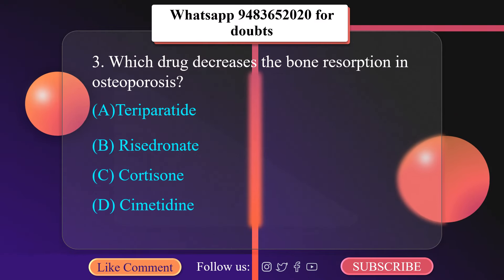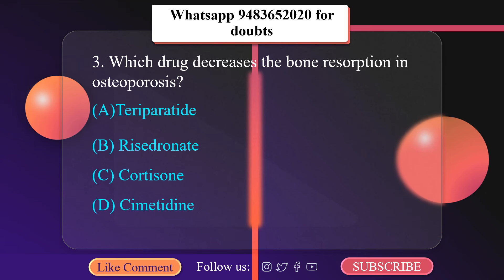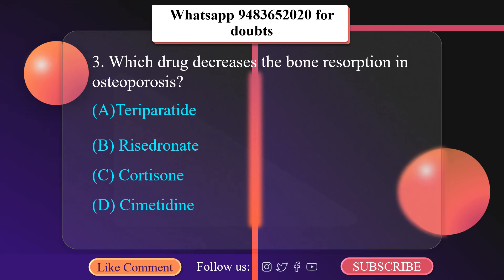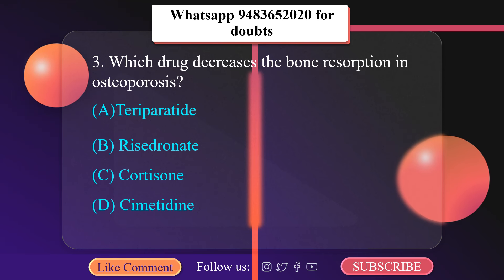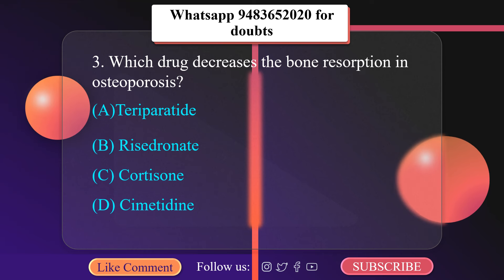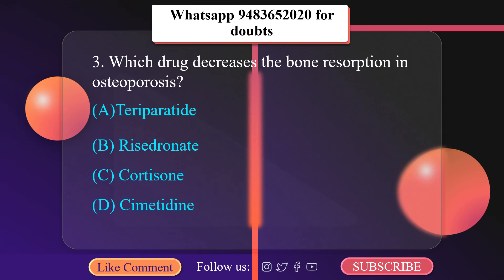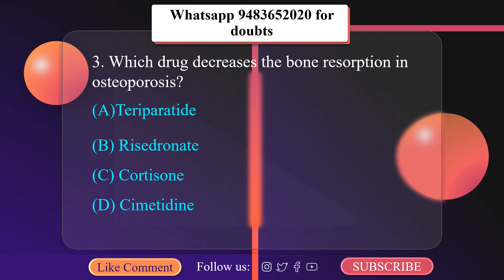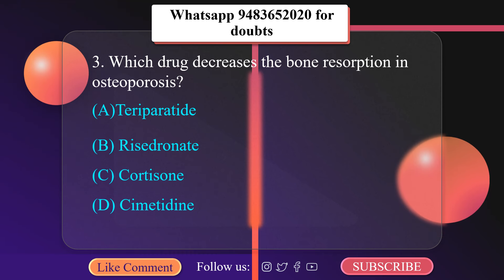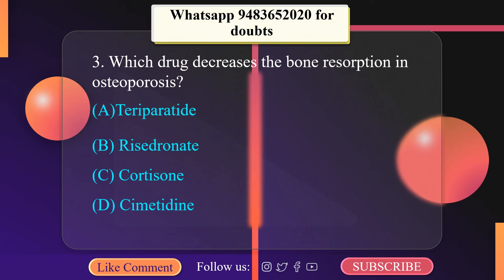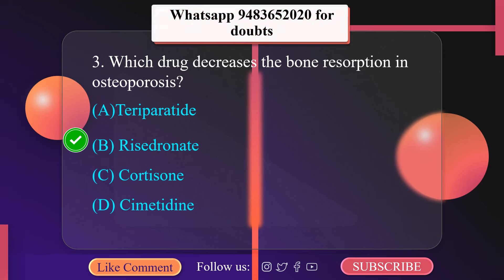Which drug decreases bone resorption in osteoporosis? A. Teriparatide, B. Risedronate, C. Cortisone, D. Cimetidine. Risedronate is a bisphosphonate that inhibits bone resorption by actions on osteoclast precursors in osteoporosis patients. Risedronate is an aminobisphosphonate indicated for prevention and treatment of osteoporosis. The correct option is B — Risedronate.